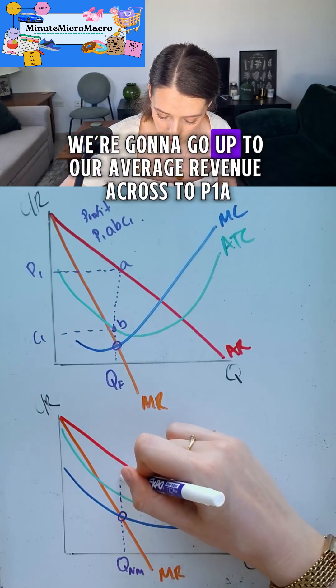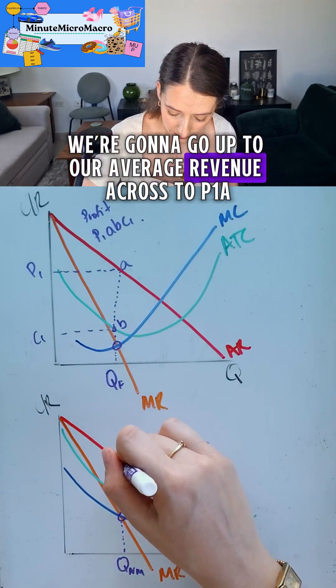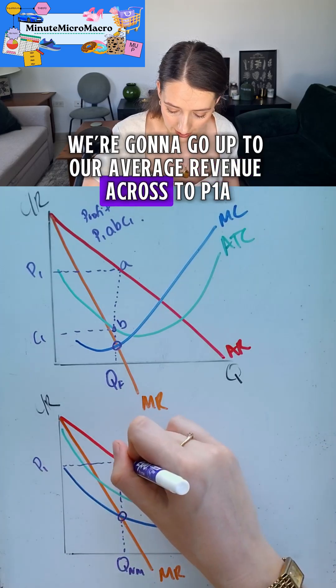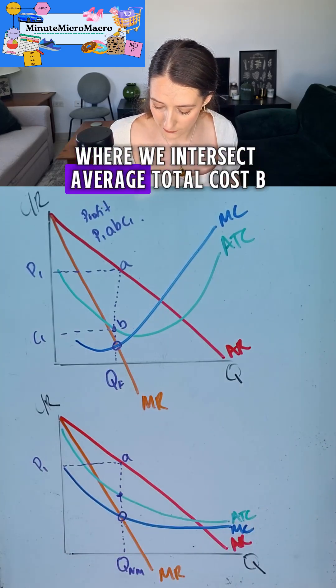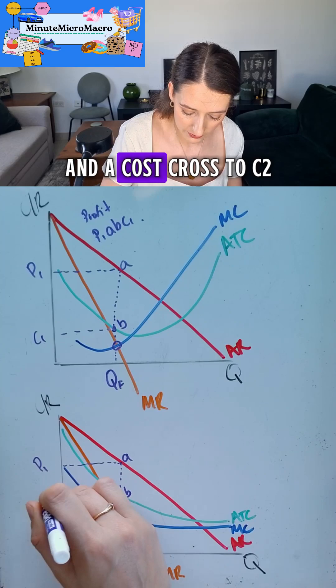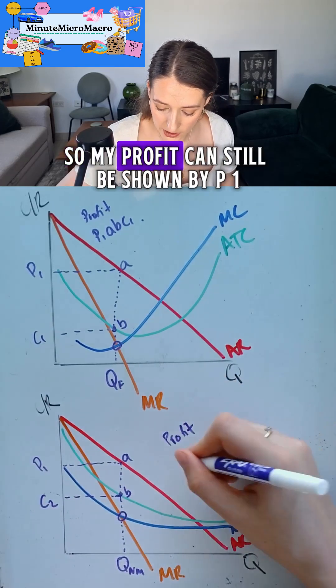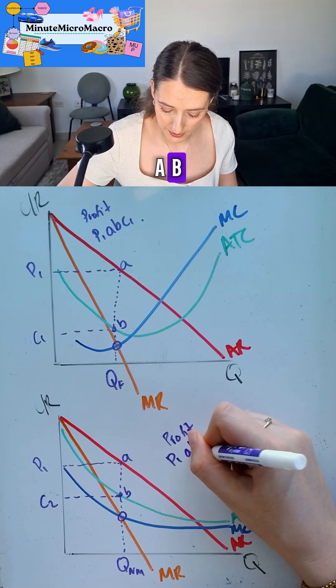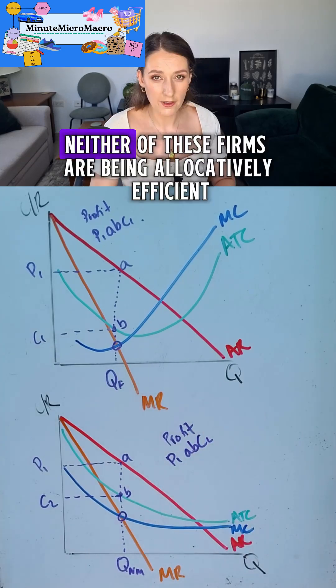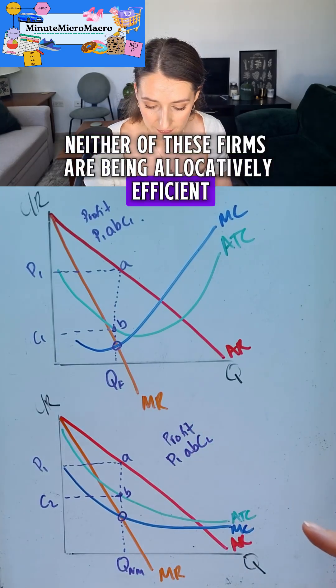So my Q natural monopoly is going to be set there. We're going to go up to our average revenue across to P1A, where we intersect average total cost, B, and across to C2. So my profit can still be shown by P1ABC2.